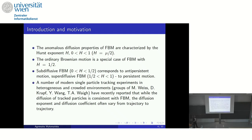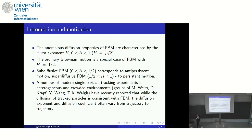What we know about fractional Brownian motion: the important parameter is the Hurst exponent H, a value between 0 and 1. When H equals one-half, we have ordinary Brownian motion. When H is between 0 and one-half, we have subdiffusive fractional Brownian motion, and then we have superdiffusive Brownian motion. Fractional Brownian motion is a really nice process. The new experiments indicate that if we have one single trajectory, fractional Brownian motion is fine. However, if we have many trajectories of the same experiment, we observe something strange.